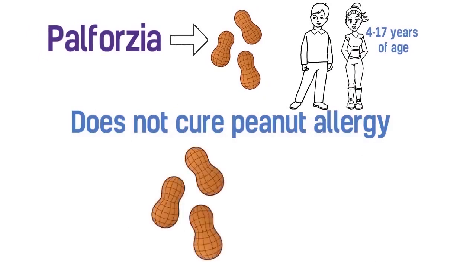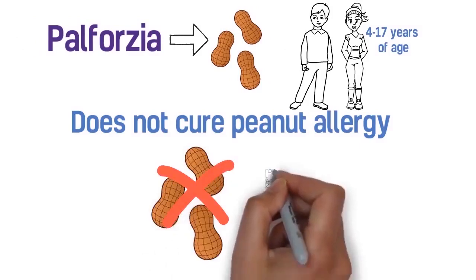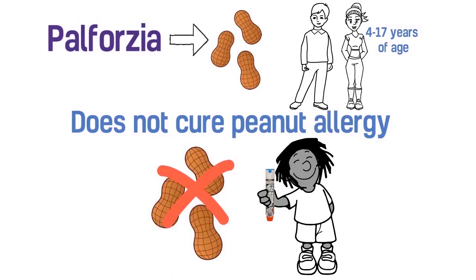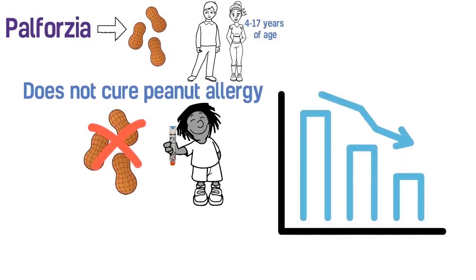Your child will still need to maintain a strict peanut-free diet and carry an epinephrine autoinjector while on this medication. The goal of this new treatment is to reduce the chance that your child will suffer a severe allergic reaction if he or she is accidentally exposed to peanuts.